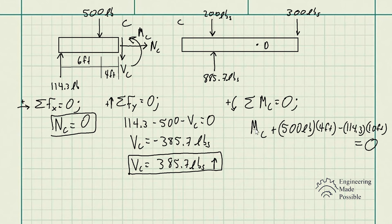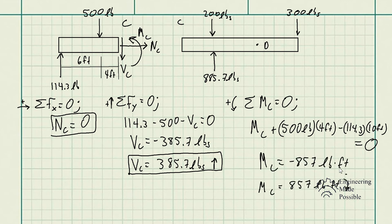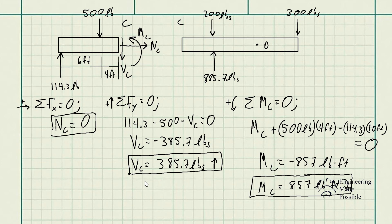Taking the sum of moments about point C, with counterclockwise positive: MC plus 500 lb times 4 ft minus 114.3 lb times 10 ft = 0, which gives MC = −857 lb·ft. The negative sign tells us the moment is actually clockwise. With the bending moment and shear force known, we can determine whether the beam will sustain the load or fail — something covered further in Strength of Materials.